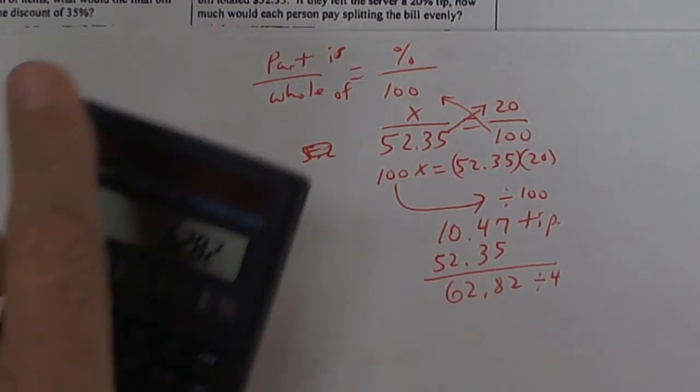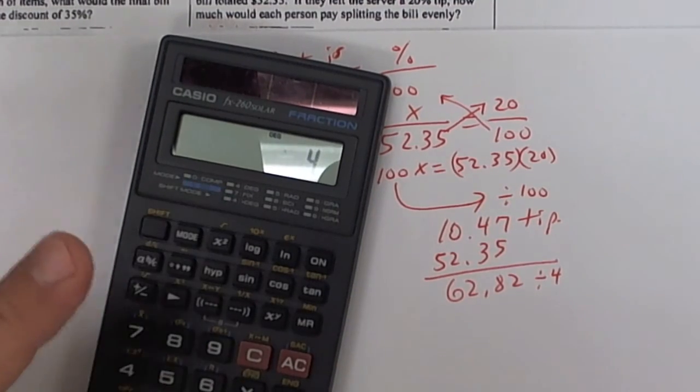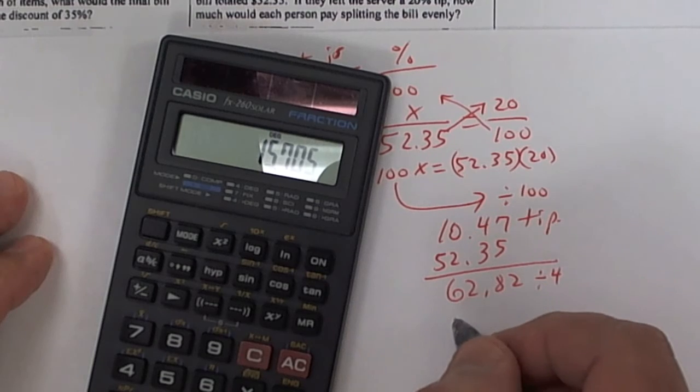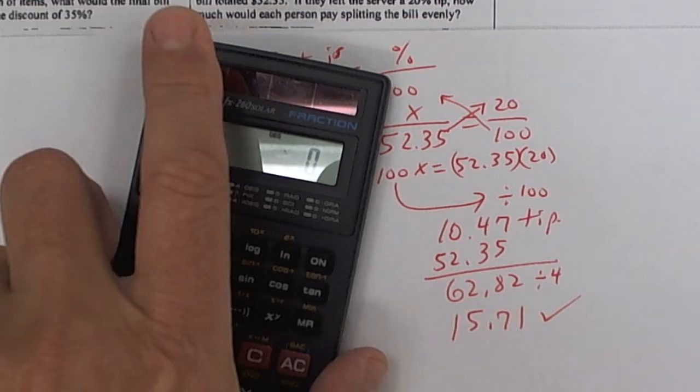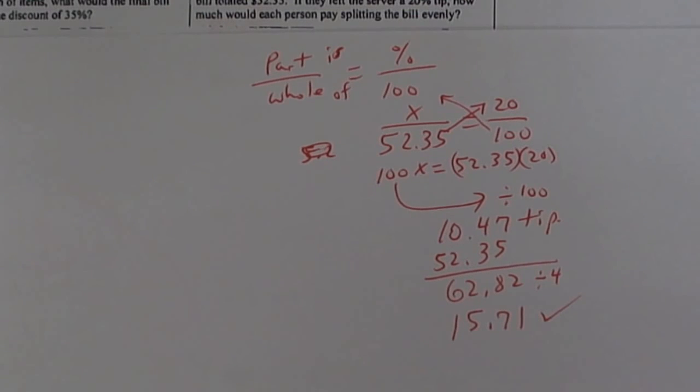So take 62.82, so take 62.82 divided by 4, and each one is going to pay $15.71. It might be a little extra, but oh well, you just use it for a tip. So each one is going to pay that.